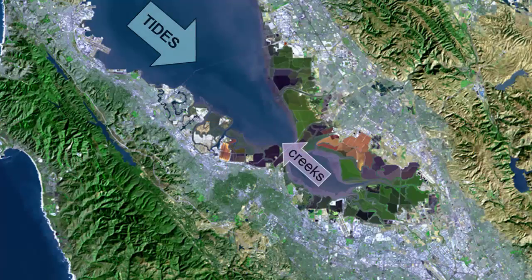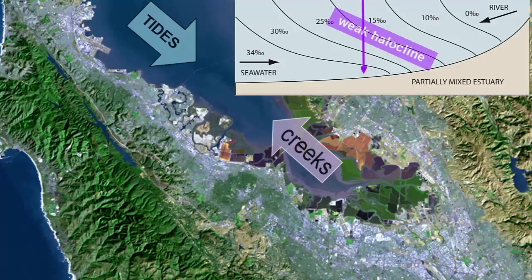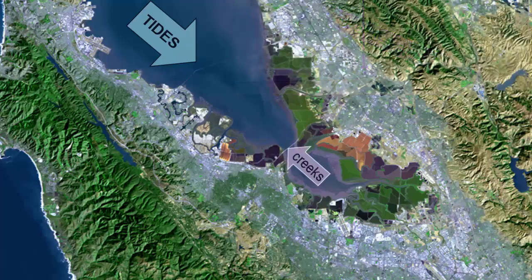In addition, there is a seasonal change that happens to mixing in South San Francisco Bay. During spring, after months of rain and at the height of snowmelt in the mountains, rivers in this area will be at their highest. The increased river volume leads to a partially mixed estuary with a weak halocline. This type of mixing is short-lived, however, and disappears as the river volume shrinks again during summer.